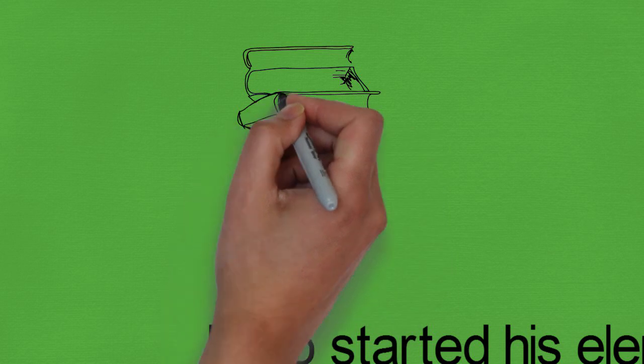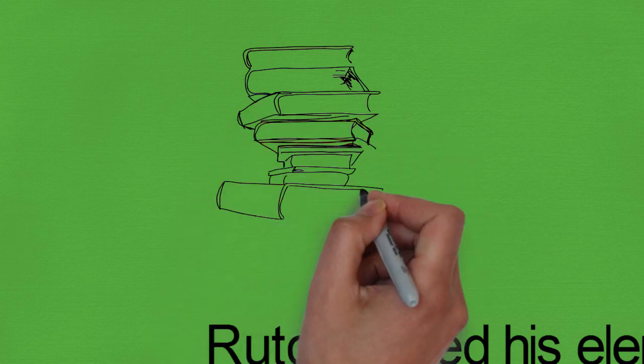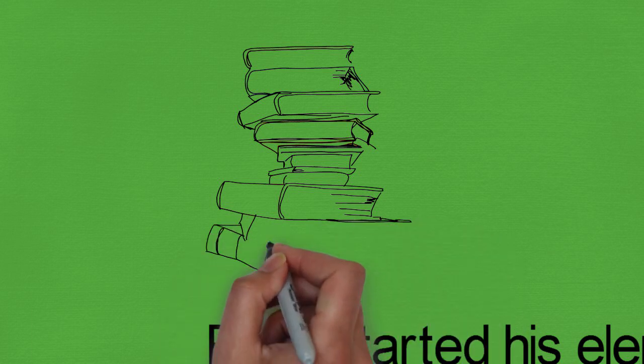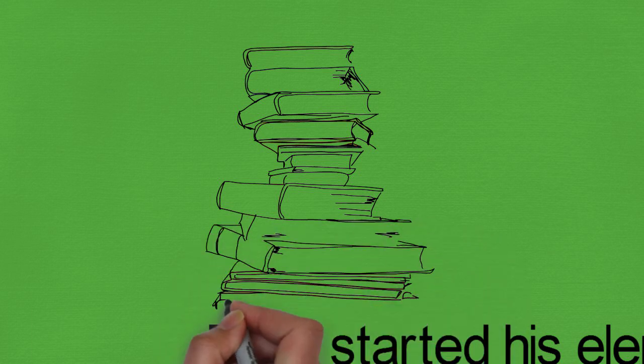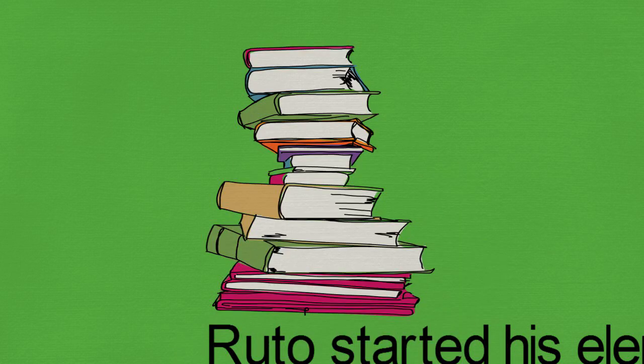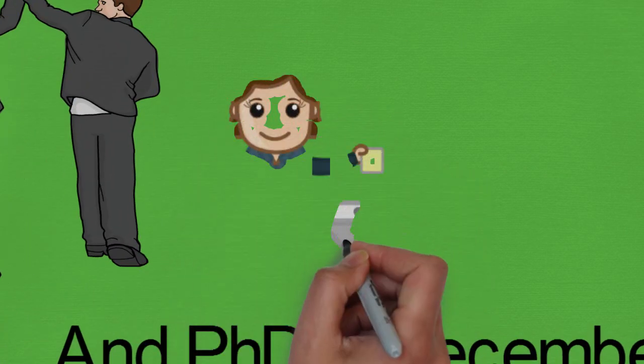before moving to Kapsabet Boys High School in Nandi County for his A-Levels. He gained admission to the University of Nairobi, graduating in 1990 with a B.Sc. in Botany and Zoology, and from the same university, he got his master's degree in Plant Ecology in 2011, as well as PhD in December 2018.